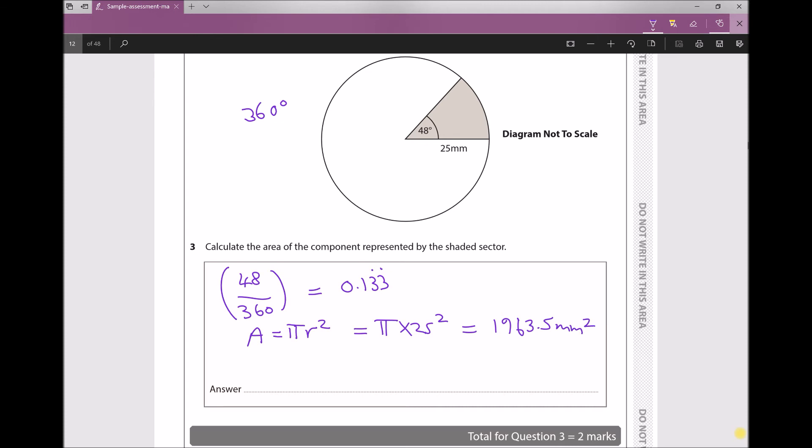But the important thing here is we don't have all of the circle. We only have 0.133 recurring of that circle, so we need to do the area of the sector equals 0.133 times 1963.5, and that will give us an answer of 261.8 millimeters squared.